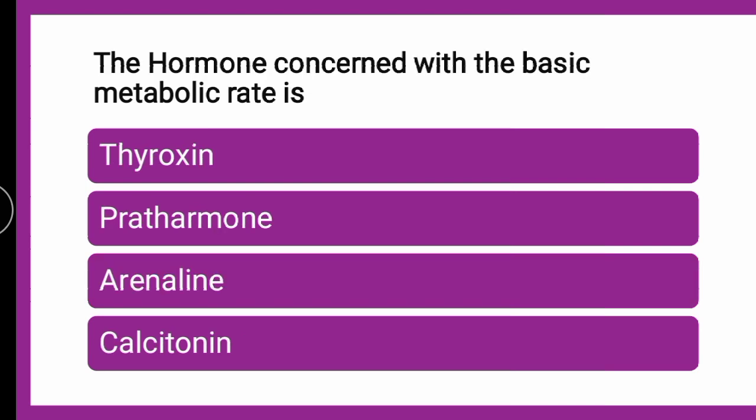The next question is: the hormone concerned with the basic metabolic rate is dash — whether it is thyroxine, parathormone, adrenaline, or calcitonin. Which among the given hormones is associated with the basal metabolic rate? You can put your answers in the comment section, and we will go for the explanation.